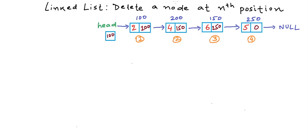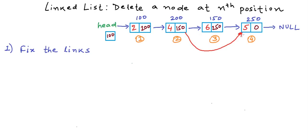When we talk about deleting a node from the linked list, we will have to do two things. First, we will have to fix the links so that the node is no more a part of the list. Let's say we want to delete the node at the third position. We will go to the second node. For the nth node, we go to the n-1th node and set its link to the n+1th node. So we cut this link and now the node at address 150 is not part of the linked list — when traversing, we go from 100 to 200, and from 200 to 250.